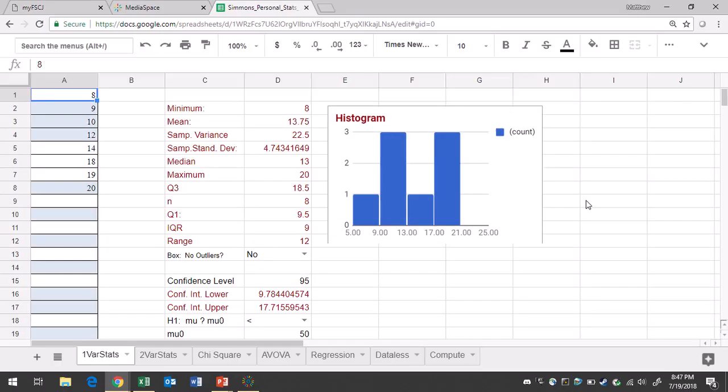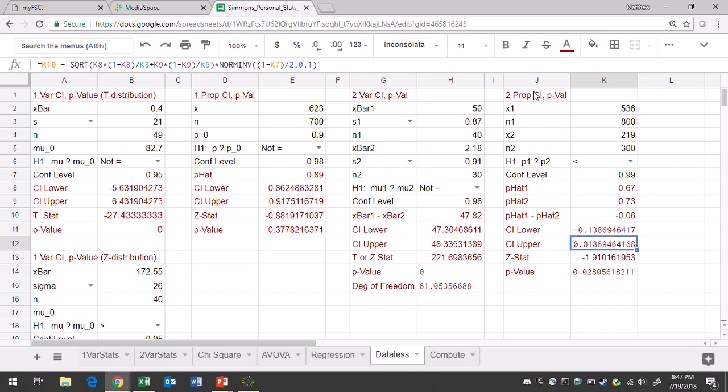So in Google Sheets you go to the data list tab. Go to the two proportion CL p-value region. Type in successes and sample size for group one. So 5, 20.